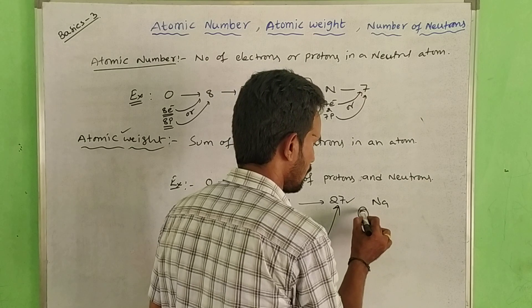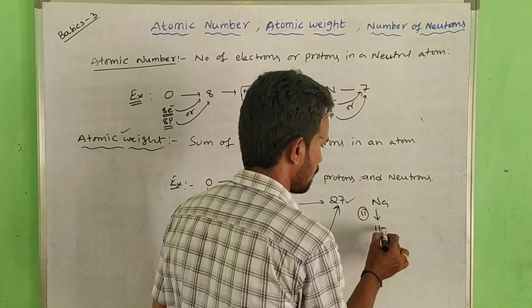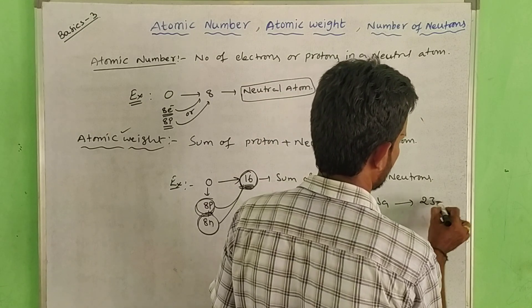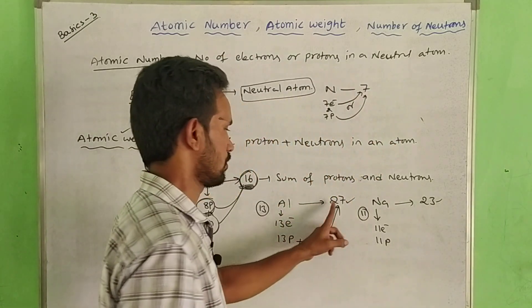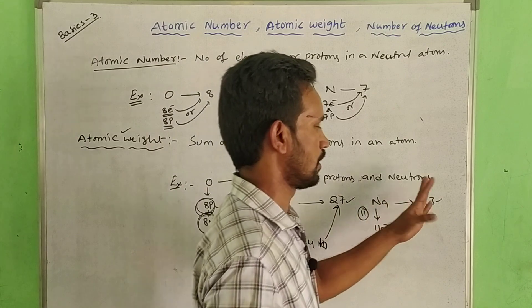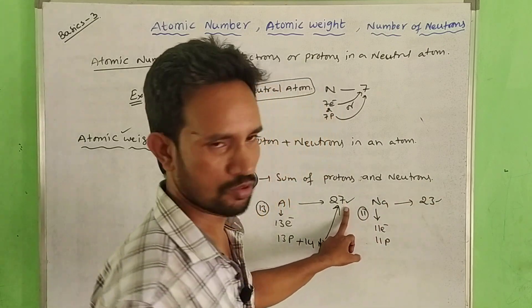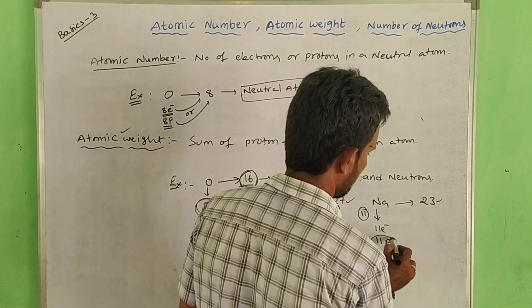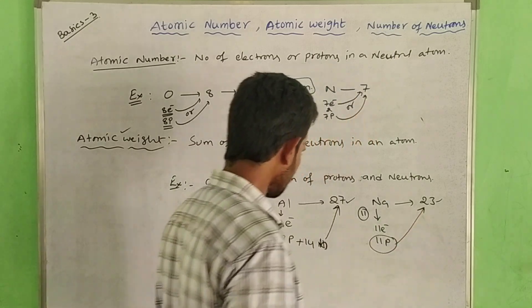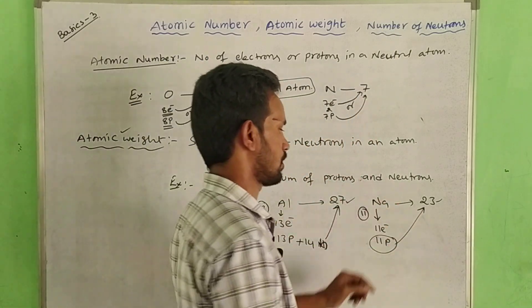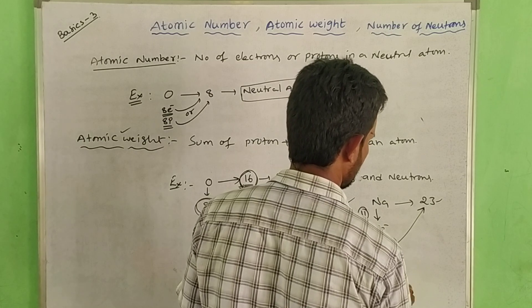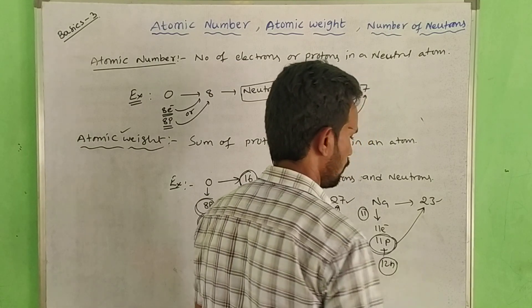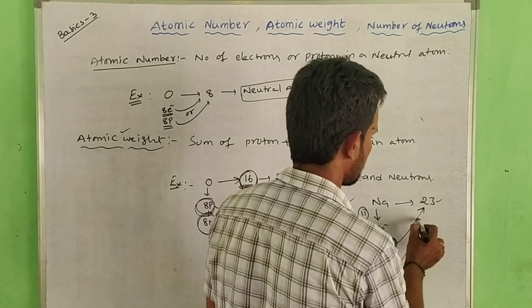Atomic number is 11, so it contains 11 electrons and 11 protons. Atomic weight is 23. Let's look at 11 protons and neutrons — atomic weight 23 minus 11 protons gives 12 neutrons.